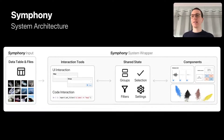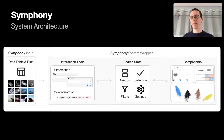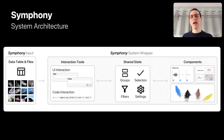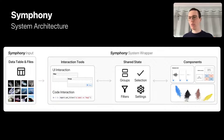Now that we've seen Symfony in action, let's take a look under the hood and peek into Symfony's system architecture. Symfony takes backing data as input, as shown in our demo. Interaction tools can then be used to manipulate the data — either UI-based or code-based interaction. Manipulations are saved in a shared state, which is synchronized across all active visualization components loaded into Symfony. Symfony also has different wrappers for different environments: a notebook-based wrapper and a dashboard wrapper.